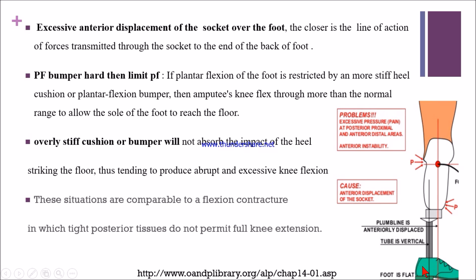If the plantar flexion bumper is too hard, it will limit plantar flexion. A stiff cushion or stiff plantar flexion bumper causes the amputee to flex their knee more than normal, which allows the sole of the foot to reach the floor. An overly stiff bumper does not absorb the impact of heel striking, leading to abrupt excessive knee flexion.